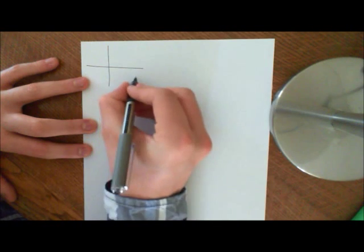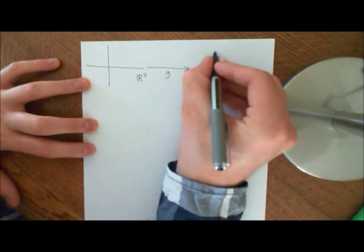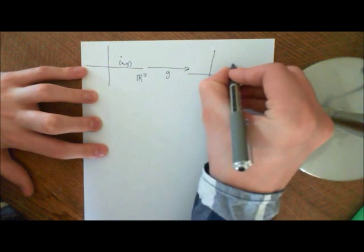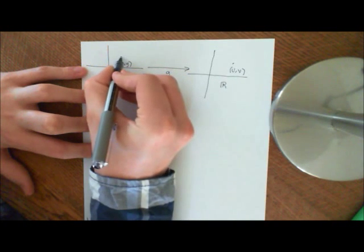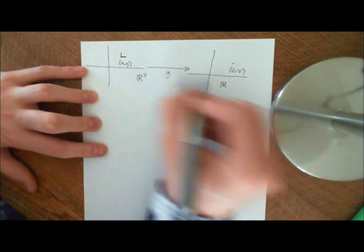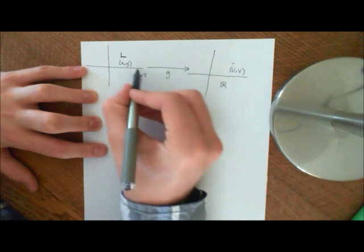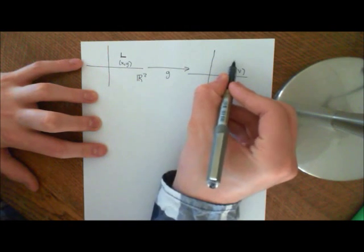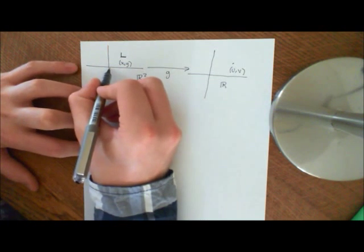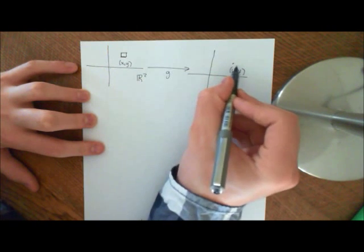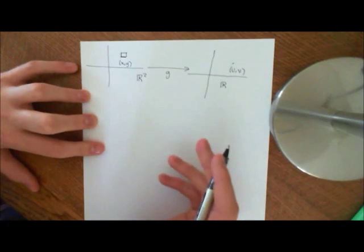Let's discuss this in more detail. We have R2 here and we have this mapping g, which is mapping onto R2. We have some point x and y here which is mapped onto some corresponding point uv. What we're going to do is start with a little box in this probability space and work out what it's transformed onto in this probability space. The reason we're doing that is because the g function is defined going this way. We're going to start with a little box here, transform it, find the ratio, and then say that the ratio going backwards is 1 over that.